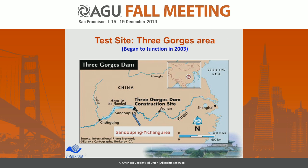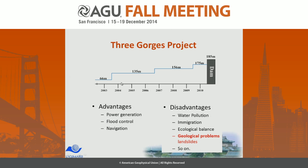The dam has a length of about 600 meters. The water level of the reservoir was raised in steps from 100 to 135 meters, then to 156 meters, and finally to 175 meters.